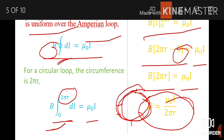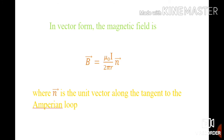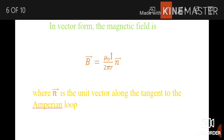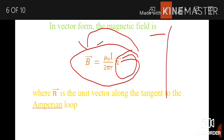The magnetic field at distance R from the infinite length of the wire is B equals μ₀I divided by 2πR. In vector form: B⃗ equals (μ₀I / 2πR) times n̂, where n̂ is a unit vector indicating the direction of the magnetic field.